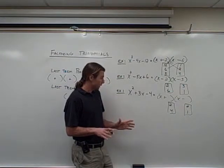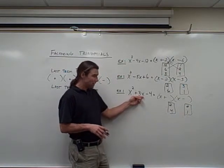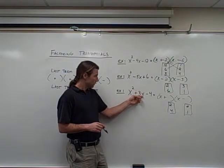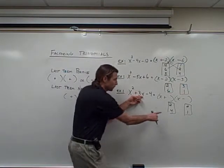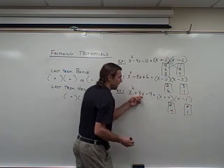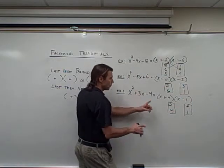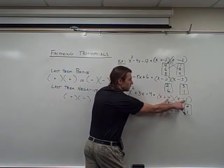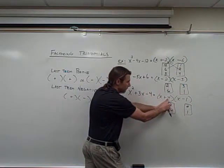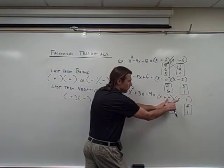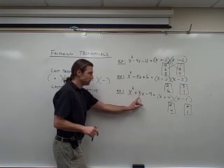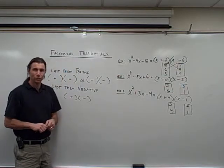Now I just need to make sure I get them in the right spot. When I add these, I want more positives than negatives, so I put the 4 in the positive spot and the 1 in the negative spot. Positive 4 times negative 1 gives me negative 4, and positive 4 plus negative 1 gives me positive 3. Hopefully this was helpful.